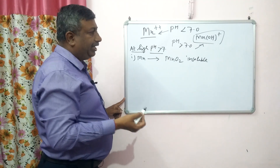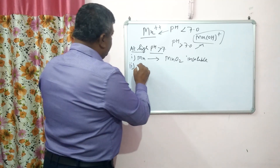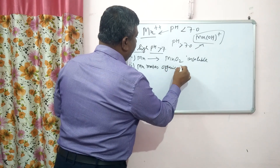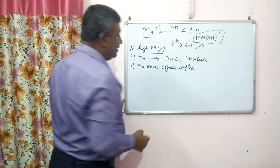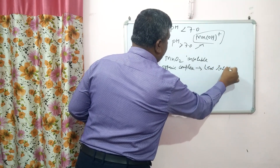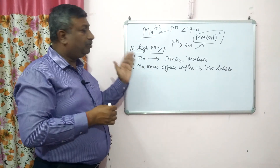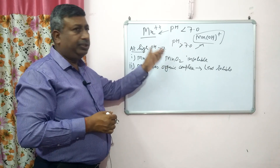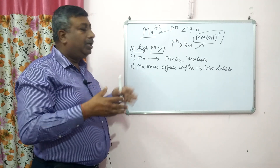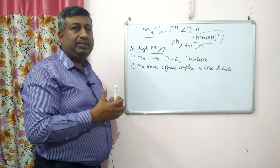Another reason is that at high pH, manganese forms organic complexes. It has affinity with organic compounds and makes organic complexes which are less soluble. Because of this less solubility, manganese availability is reduced. At alkaline pH, meaning pH more than 7, these less soluble organic complexes also contribute to reduced manganese availability.